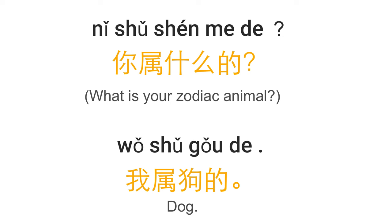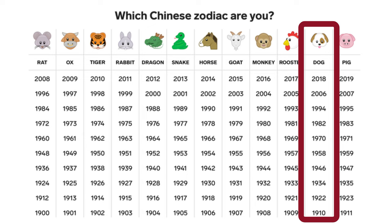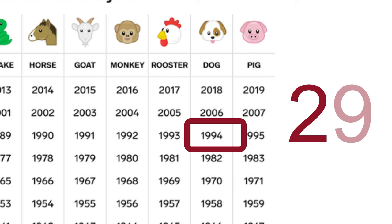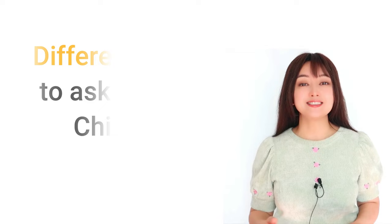For example: 我属狗的 — 'I was born in the year of the dog.' You'd know this person is in their 20s or 30s, check the list, find they were born in 1994, and calculate they are now 29. That covers the different ways to ask for age in Chinese.